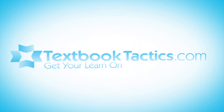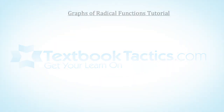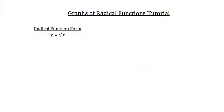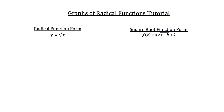This is the graphs of radical functions tutorial. Radical functions have a general form: y is equal to the z-th root of x. You more commonly see this as a square root function where f(x) is equal to a times the root of x minus h plus k, and h and k are the x and y coordinates respectively of the vertex of that square root function.